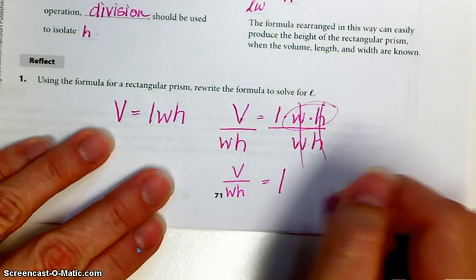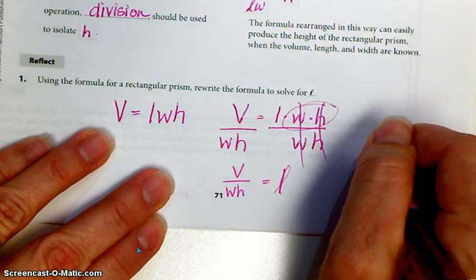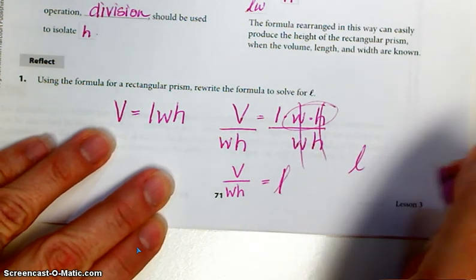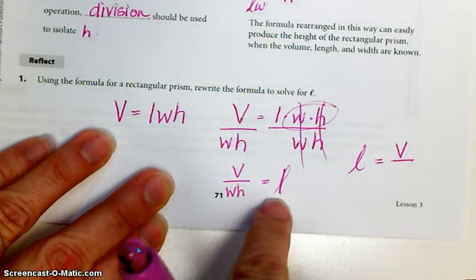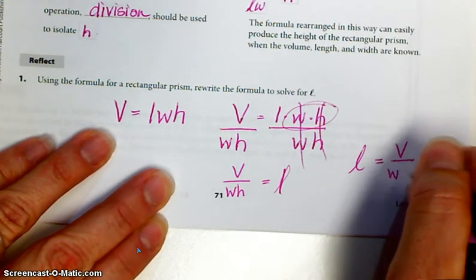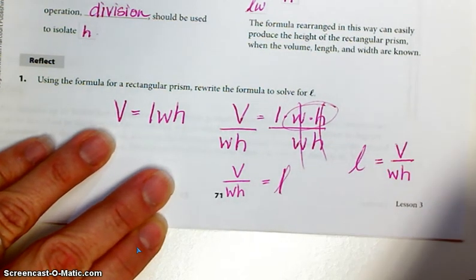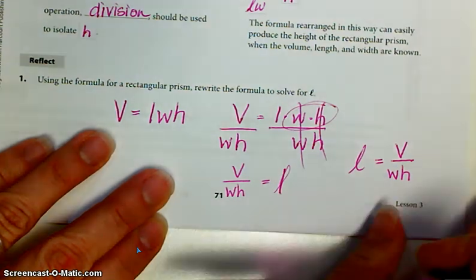Length is equal to V over width times height. So l, I like to write what I'm solving for on the left and everything else on the right. But it's not incorrect to write this. So length is equal to volume divided by width and height multiplied together.